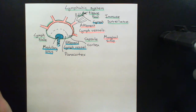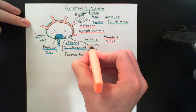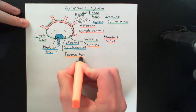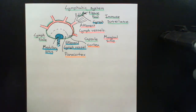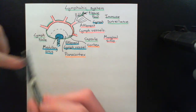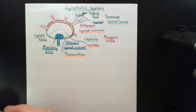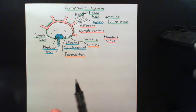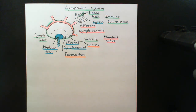In the paracortex you're going to have loads and loads of T cells, and this is one of the places where these mature, naive T cells that we're producing — of both the CD4 and CD8 type — can hang out. They don't separate; they inter-disperse. So you'll have an array of T cells with CD8 and CD4-positive T cells integrated together.